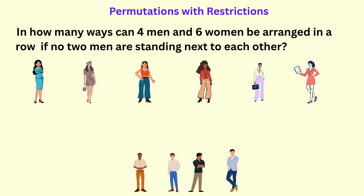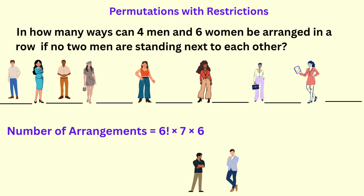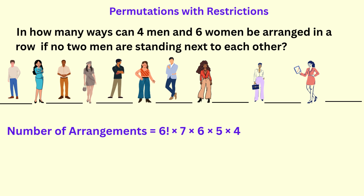Let's begin by arranging the six women. Since all the women are distinct, they can be arranged in six factorial ways. Now for the men — we have seven possible gaps where the men can be placed. After placing the first man we have six gaps, after the second man five gaps, and after the third man four gaps remain for the fourth man. So the total number of valid arrangements is six factorial times seven times six times five times four, which equals 604,800 arrangements.